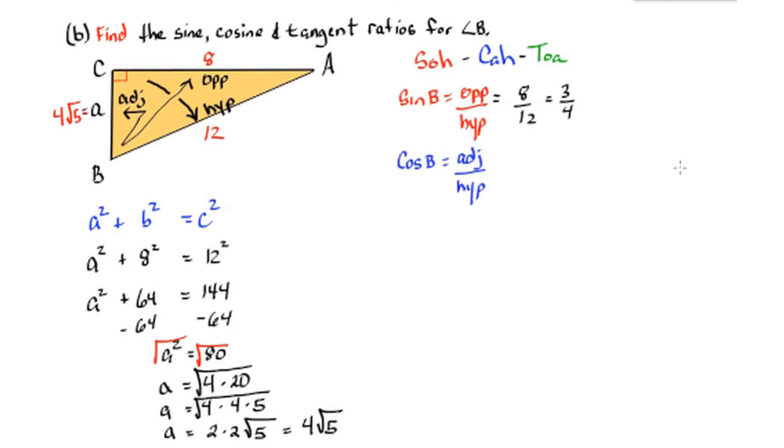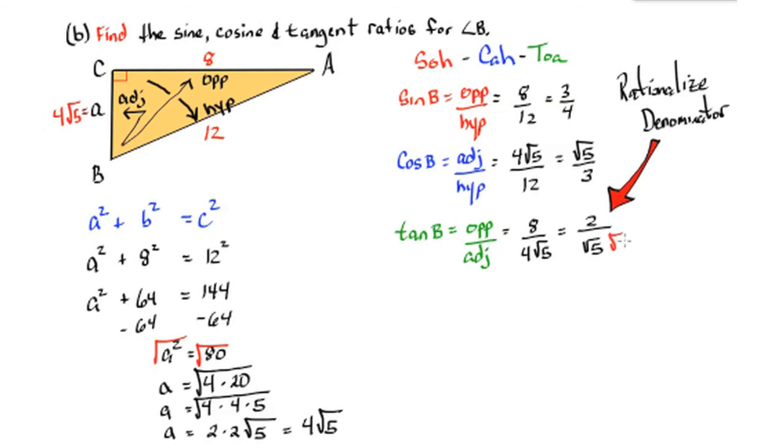Cosine of B is the adjacent leg over the hypotenuse, which is 4 root 5 over 12, which simplifies to root 5 over 3. And the tangent of B equals the opposite leg over the adjacent leg, which is 8 over 4 root 5, which simplifies to 2 over root 5. We have to rationalize the denominator by multiplying top and bottom by root 5. And we get 2 root 5 over 5. And those are our ratios.